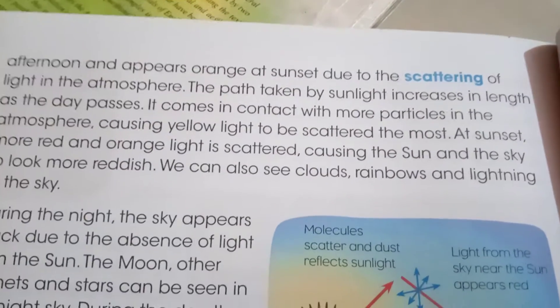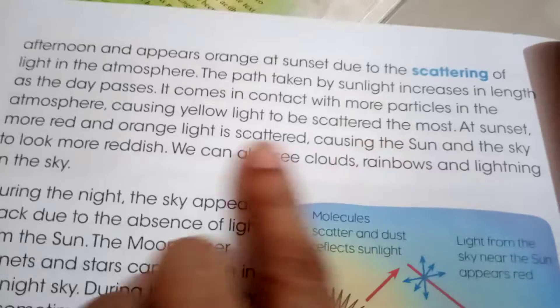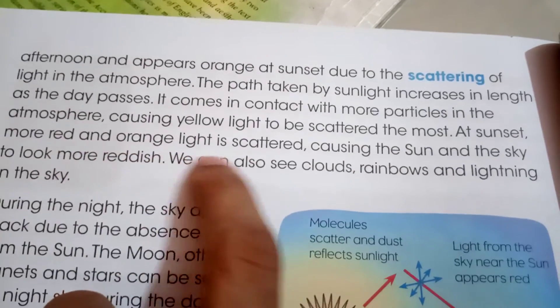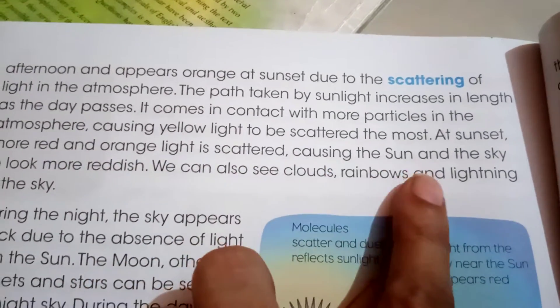Question number 3: How does the sky look at sunset? The answer is on page number 148. At sunset, more red and orange light is scattered, causing the sun and the sky to look more reddish.